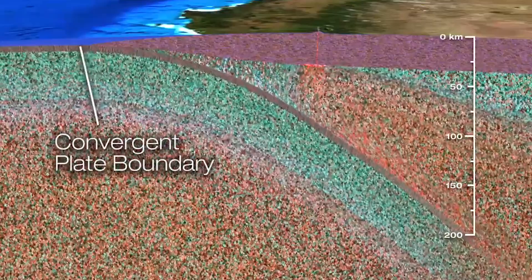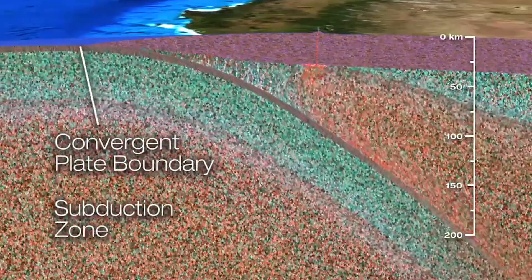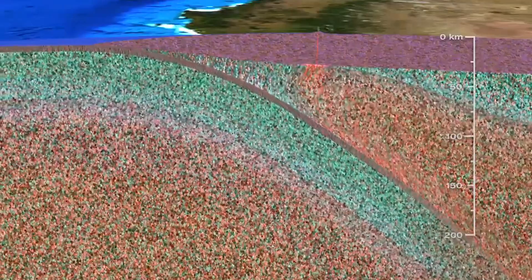How do new subduction zones form? A subduction zone is where an oceanic plate, or lithosphere, sinks into the mantle. The sinking of oceanic lithosphere powers plate tectonics and is where the most powerful earthquakes, tsunamis, and volcanic eruptions occur.